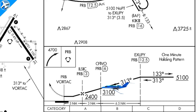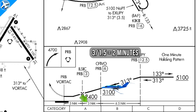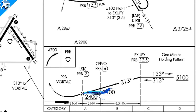The first step is to determine how many miles per minute the airplane is traveling. To get that answer, divide the ground speed of 90 knots by 60, which gives an answer of 1.5 miles per minute. Dividing the distance of 3 miles by the rate of 1.5 nautical miles per minute, it's going to take 2 minutes to get from the 6 DME to the final approach fix.